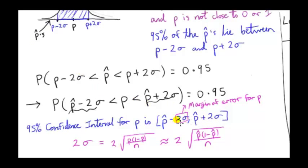Two σ is called the margin of error for P. If we put P hat at the center of this interval, this is P hat plus 2σ or P hat plus the margin of error, and here we have P hat minus the margin of error. Here's our 95% confidence interval. P is somewhere in here.